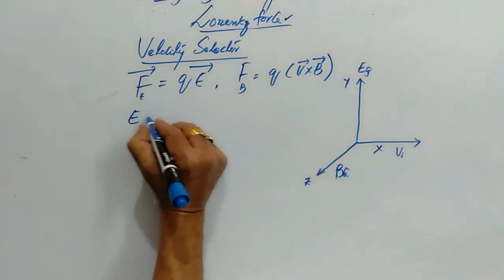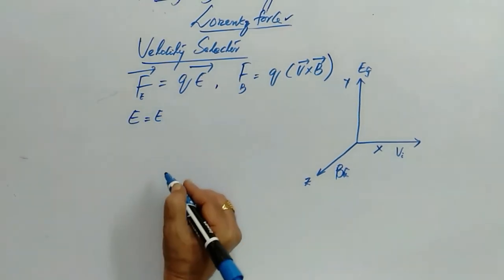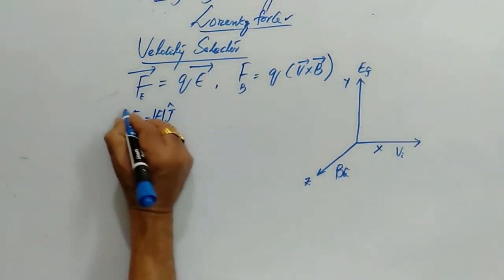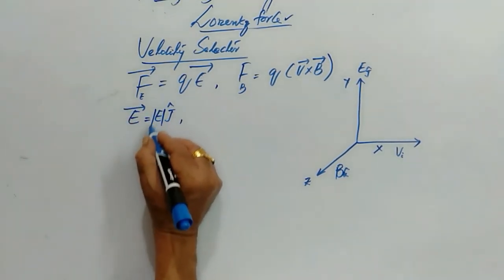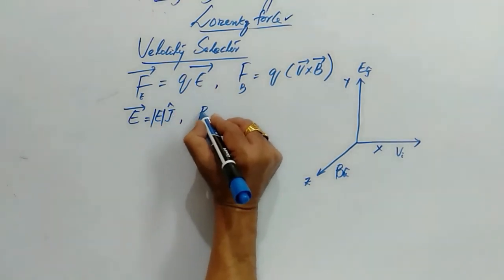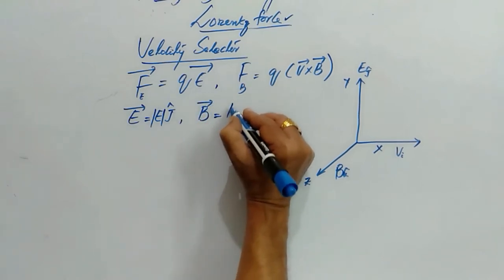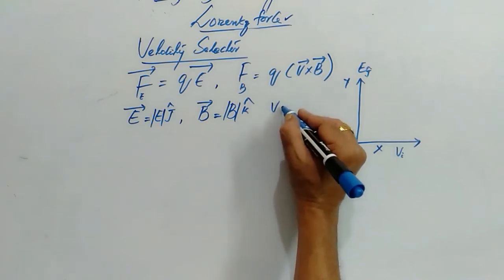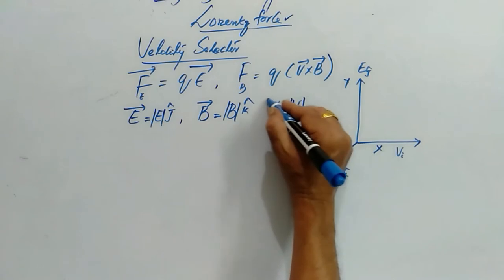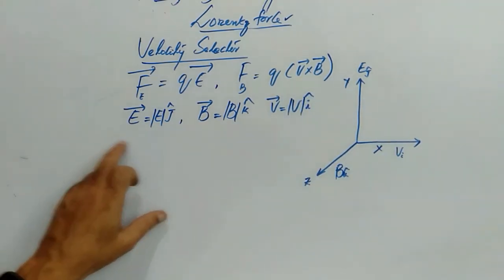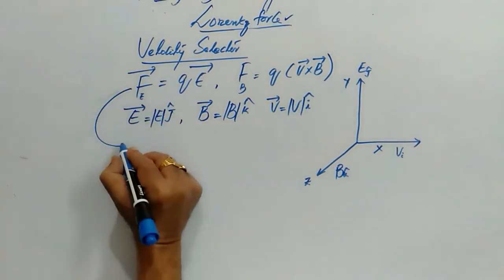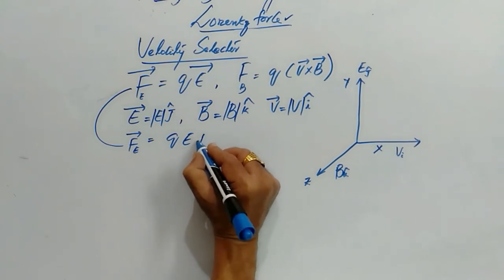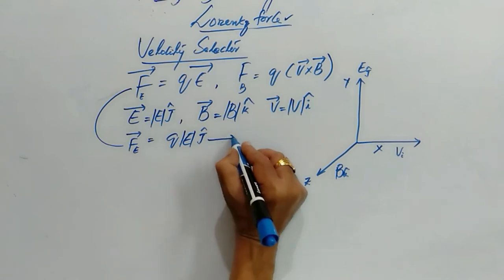Here we can write E is equal to along, electric field is the magnitude times it is along the y-axis. The velocity, so this is a vector notation. Now the force, this electric force is along j.